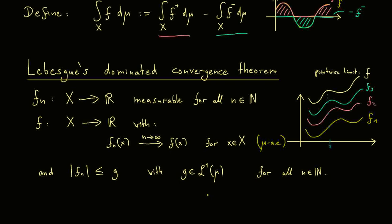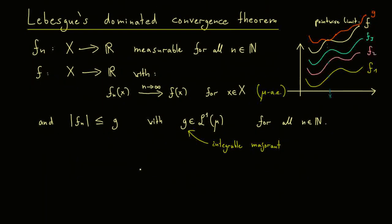Now this g is what one usually calls an integrable majorant. So this is what Lebesgue's dominated convergence theorem indeed needs. It needs an integrable majorant, so a function that lies above all the other functions here. This means it's not important what exactly the function g is. You only need this inequality and you need that it's integrable. From these two properties now, all the other things follow.